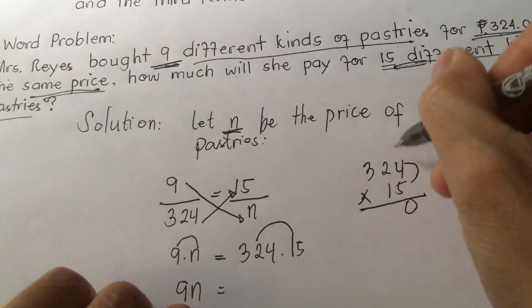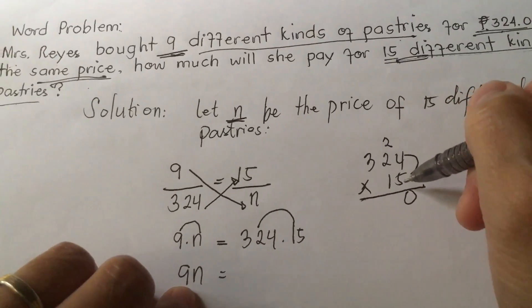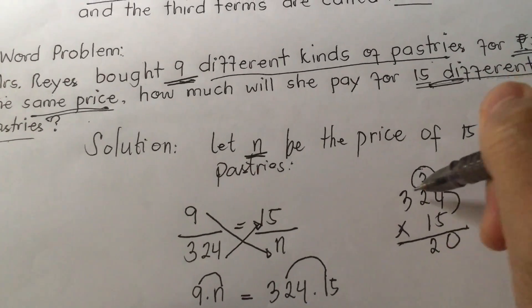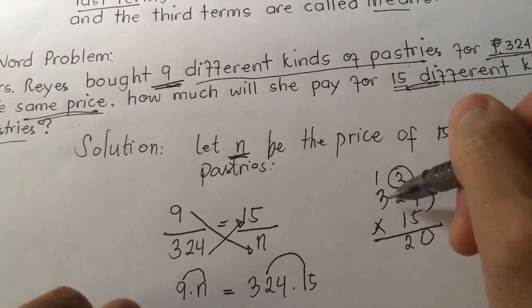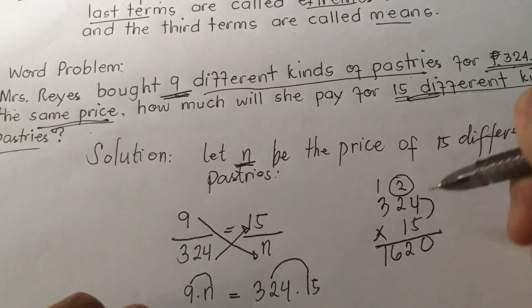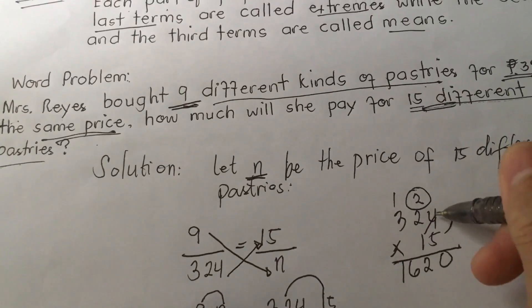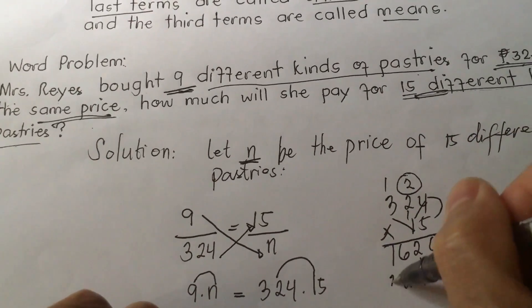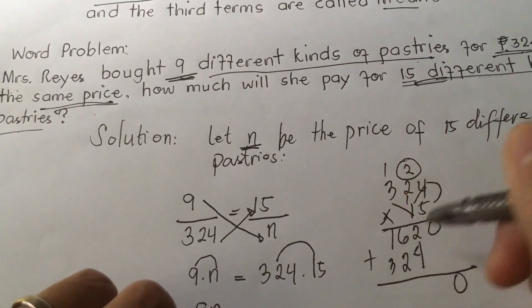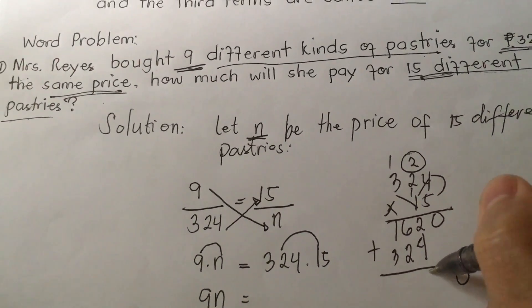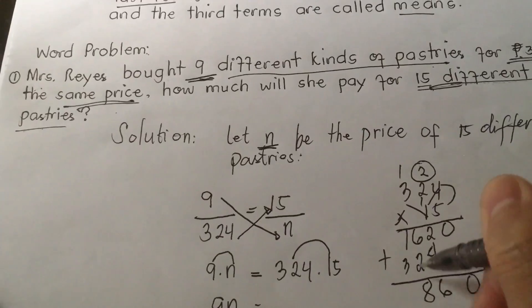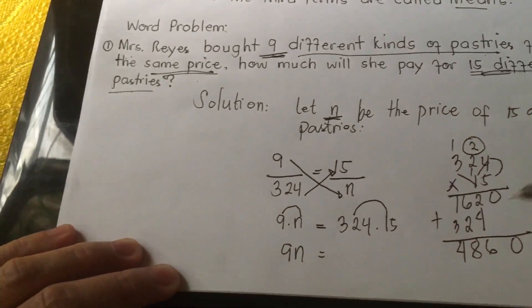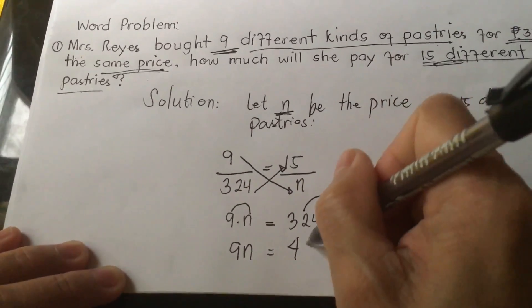324 times 15: 4 times 5 is 20, write 0 carry 2. 2 times 5 is 10 plus 2 is 12, write 2 carry 1. 3 times 5 is 15 plus 1 is 16. Then multiply by 1: write 324. Adding: 6 plus 2 is 8, 1 plus 3 is 4. So 324 times 15 equals 4,860.